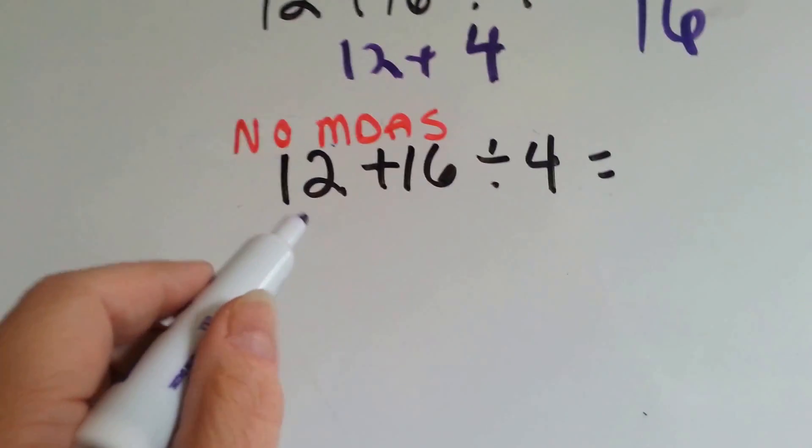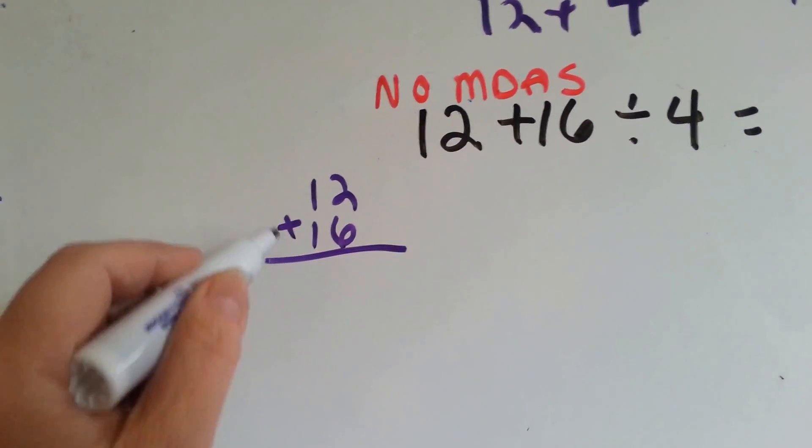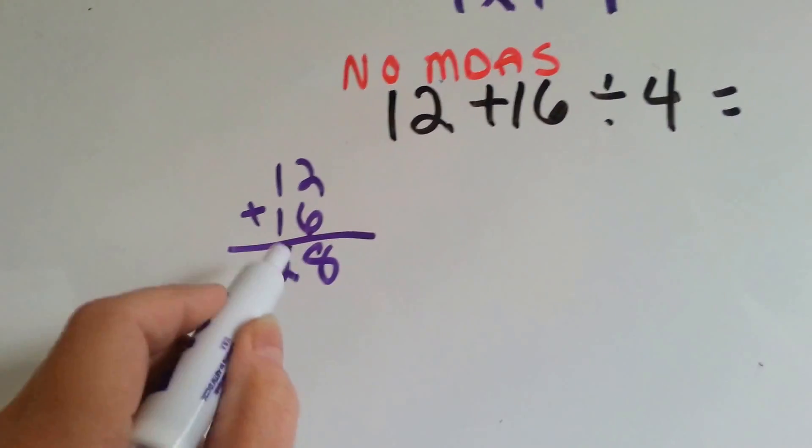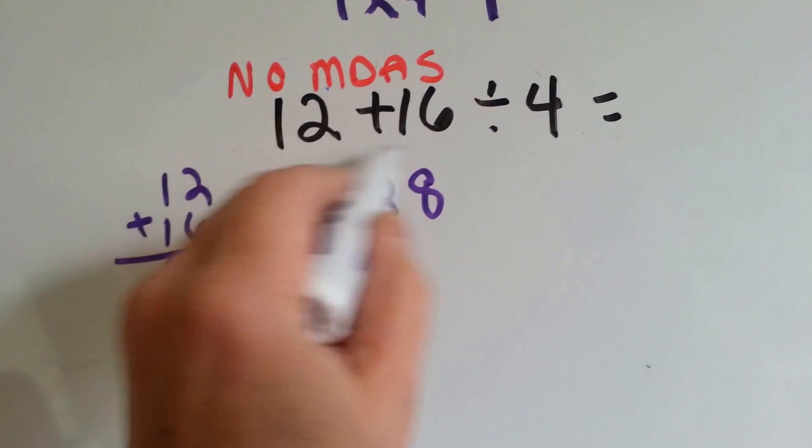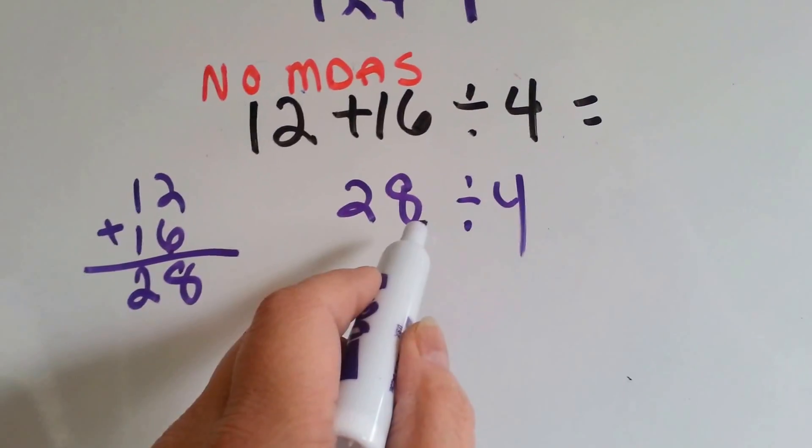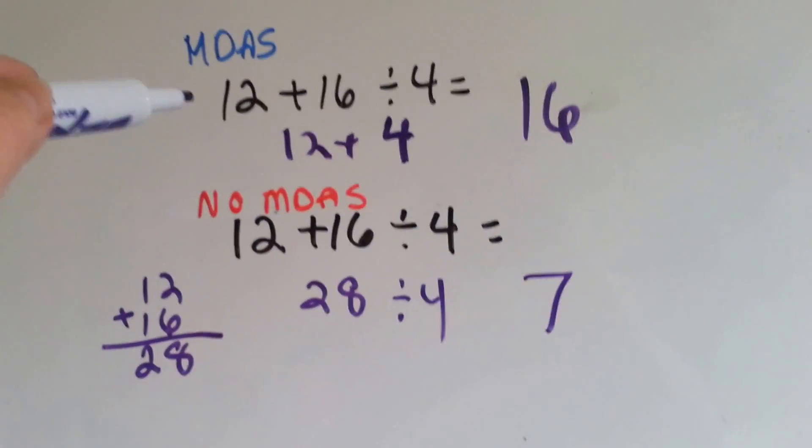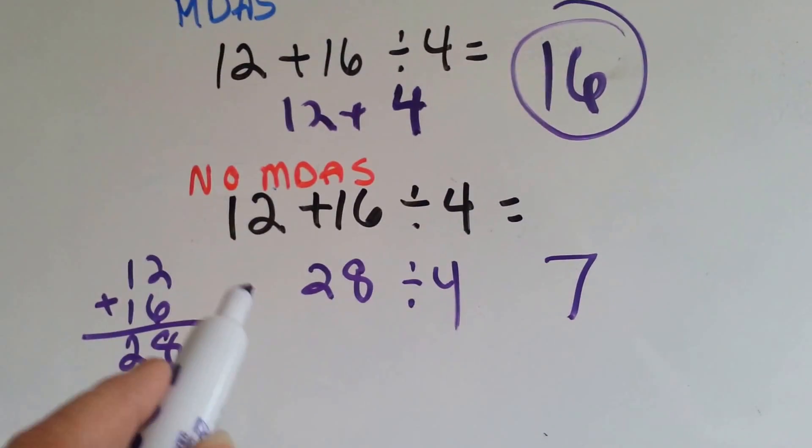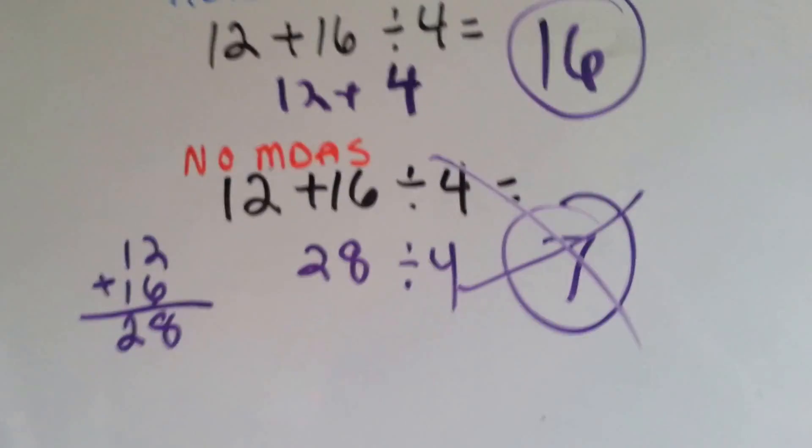Now let's do it without order of operations. What's 12 plus 16? 6 plus 2 is 8. 1 plus 1 is 2. So, now we have 28 divided by 4. Because this equals 28, and we're going to divide it by 4. What times 4 equals 28? 7. Look. If we used the order of operations, we got 16, which is the correct answer. If we didn't use order of operations, we get 7. And you know what? You'd get it marked wrong in the test.